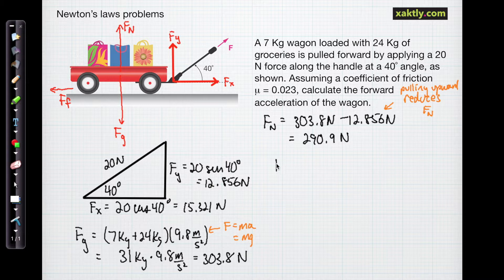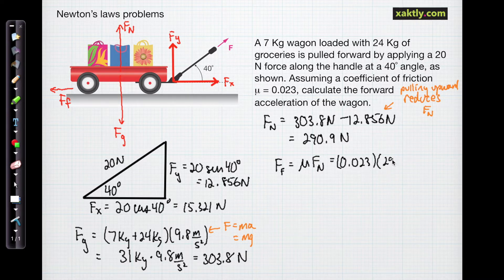Now the force of friction is the coefficient of friction times the normal force. We know the coefficient of friction, so it's mu times f sub n. Mu is 0.023. Remember mu is the Greek letter lowercase m. So we just multiply that by our 290.9 newtons, and we can find the frictional force, and that's 6.69 newtons.